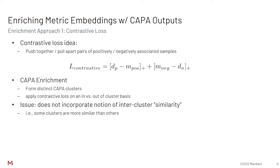A common approach to metric learning is the contrastive loss, which has a simple loss function. Our aim is precisely to push together positively associated samples and pull apart negatively associated samples. We have positive and negative margins, which you can think of as optimization bounds — beyond a certain point of closeness or distance apart, we don't necessarily want to equalize further. To use this approach with CAPA, one way is to form distinct CAPA clusters, apply clustering, and then apply contrastive loss on an in-cluster versus out-of-cluster basis.